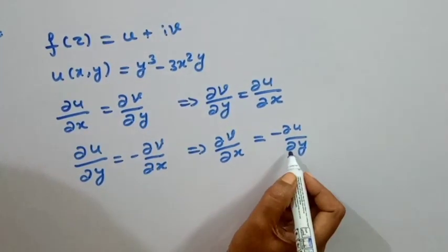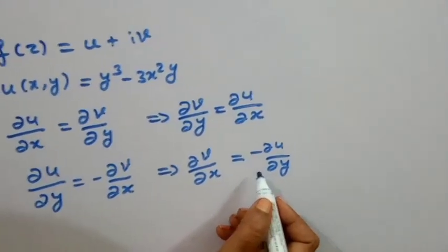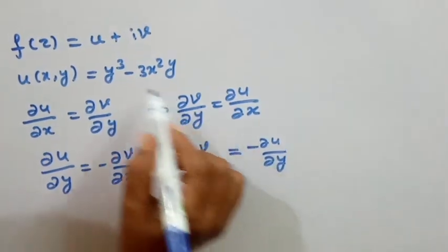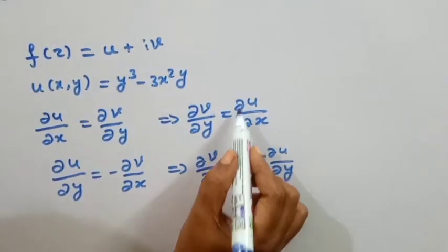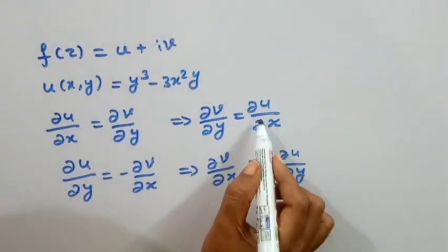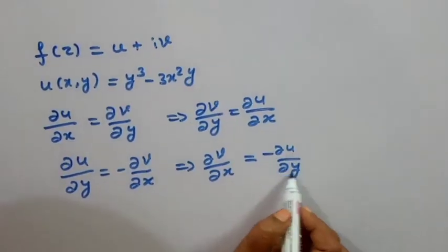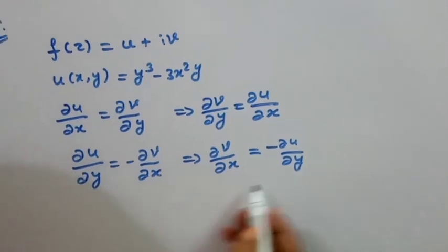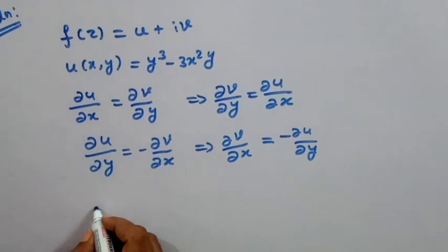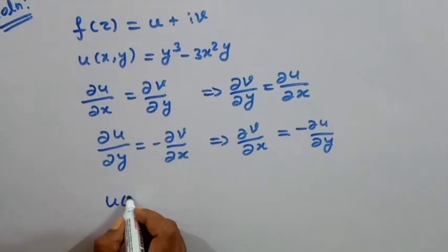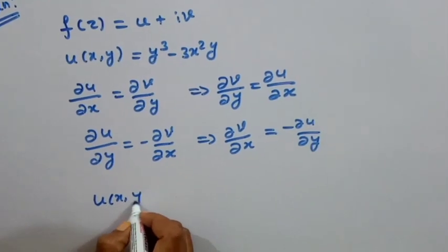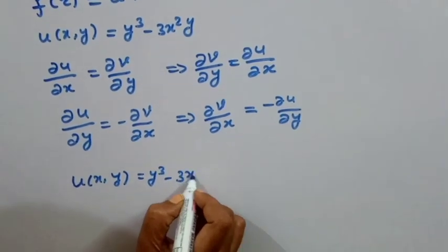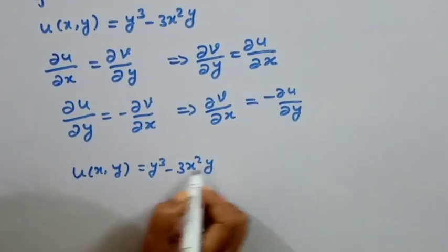Now we calculate this. We calculate dou u by dou x and dou u by dou y and substitute the values. Given u of x, y is equal to y cube minus 3x square y.